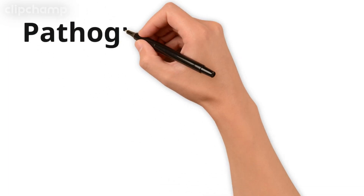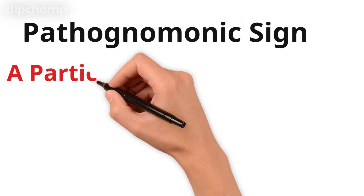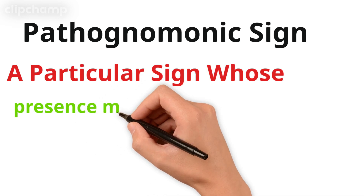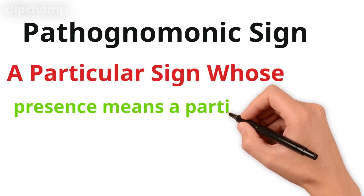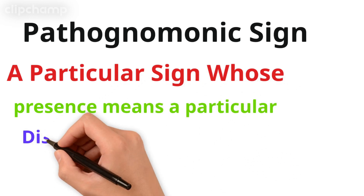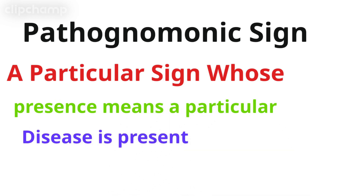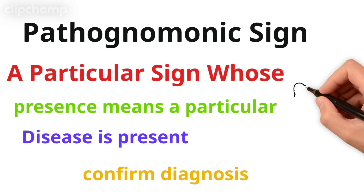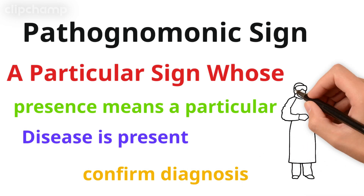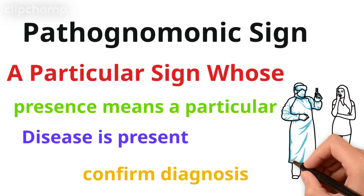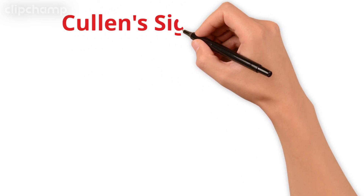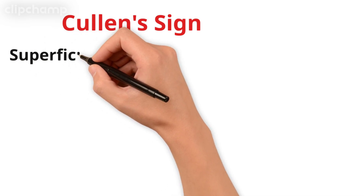First of all, we have to discuss what a pathognomonic sign actually is. A particular sign whose presence confirms the diagnosis of a disease — meaning if a particular sign is present, you can confirm it is associated with that disease. It is the pathognomonic sign of that disease and confirms the diagnosis. So if you find any sign in the patient, you can confirm the diagnosis.